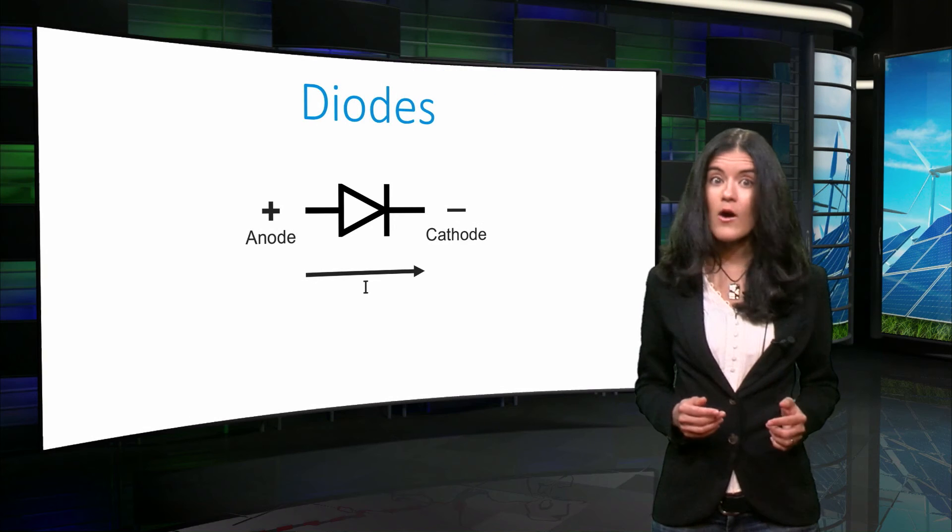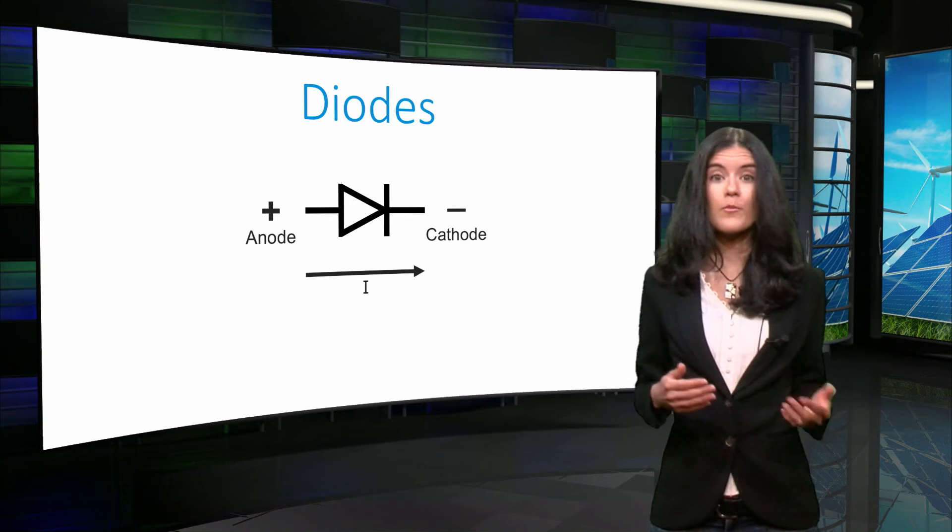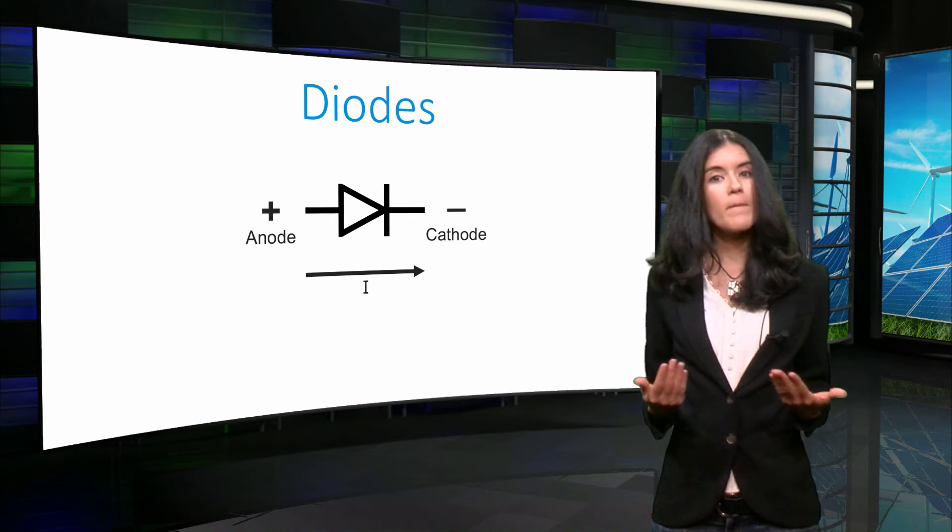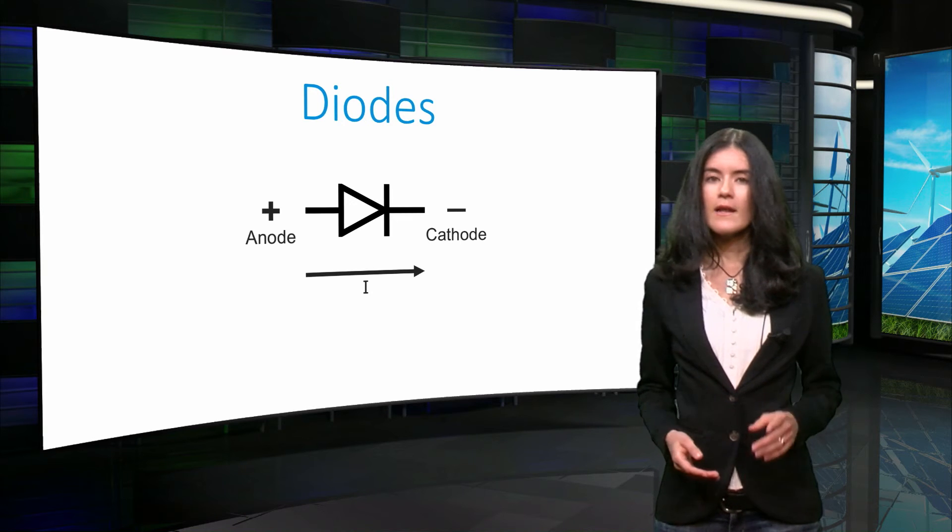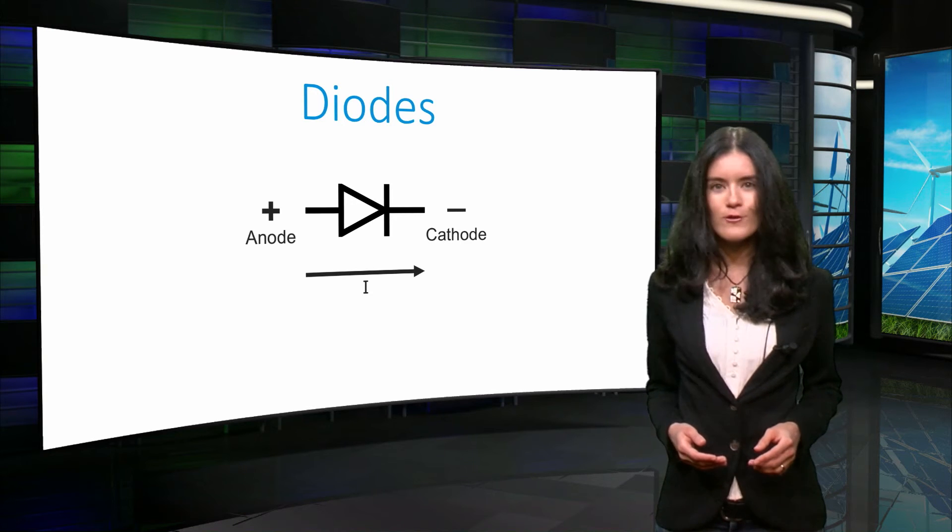Let's see now how this information about the operation of the diode will help us to understand how a power converter works. Let's consider a circuit containing four diodes.